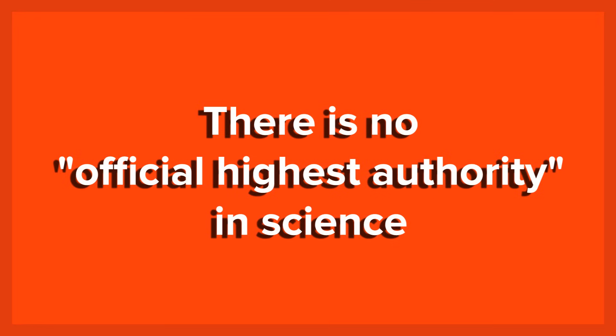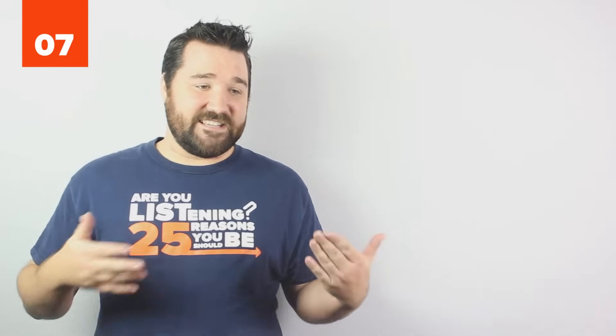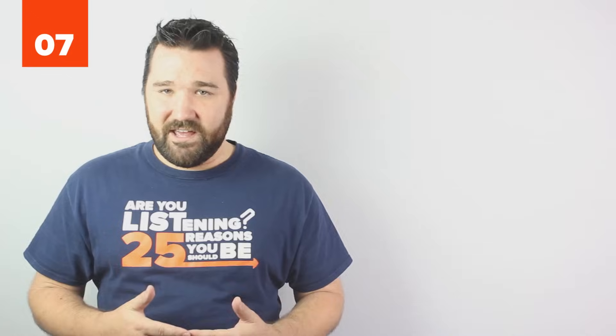Number 7. There is no official highest authority in science. There is no group of people sitting around dictating the laws and theories of science. This may sound elementary to some, but to others, this is critical to understand. Anybody can go out and try to disprove scientific theories. In fact, that's what scientists do every single day. They try their best to disprove their theories to see if there exists a better one.